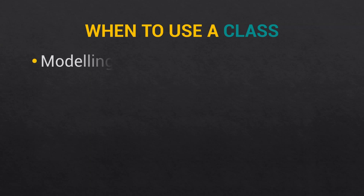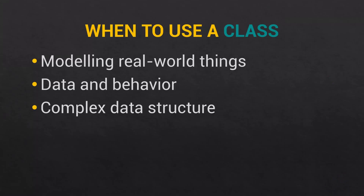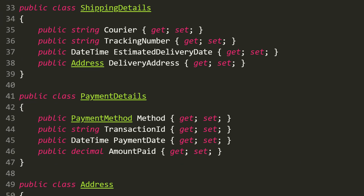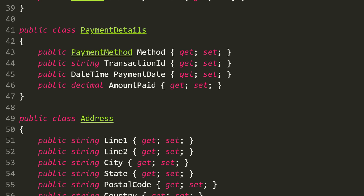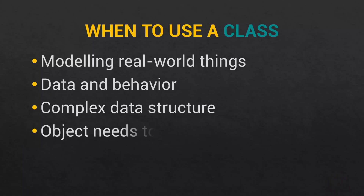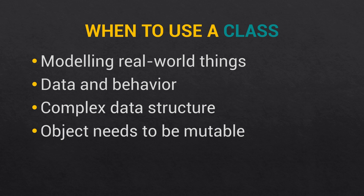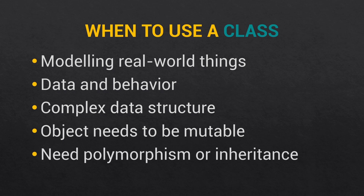So when is using a class the best approach? When you want to model a real world thing that has both data and behavior, which translates to properties and methods. A class should also be your go-to type if your data structure is particularly complex — having loads of properties or having loads of child properties that have their own child properties. Also if your instantiated object needs to be referenced across your application by multiple other classes and the object data needs to be modifiable. Class is also the right choice if you need to leverage object-oriented behaviors like polymorphism or inheritance.